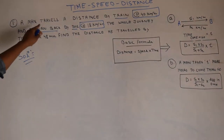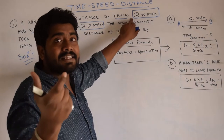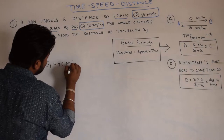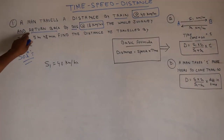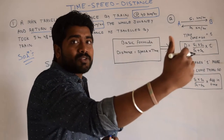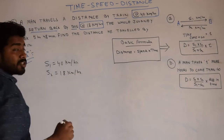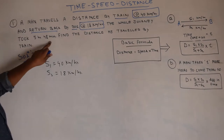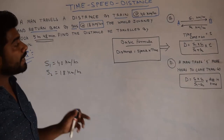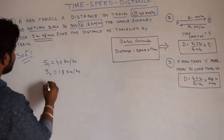The first question: A man travels a certain distance by train at 40 km per hour — so S1 = 40 km/h. He returns by bus at 18 km per hour — so S2 = 18 km/h. The whole journey took 5 hours and 48 minutes. Since the entire journey time is given, we will use the first formula. The total time T = 5 hours 48 minutes.